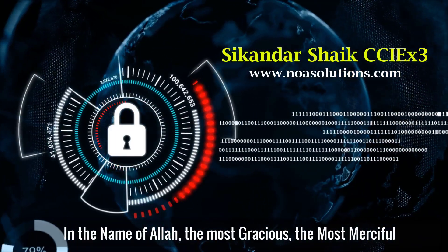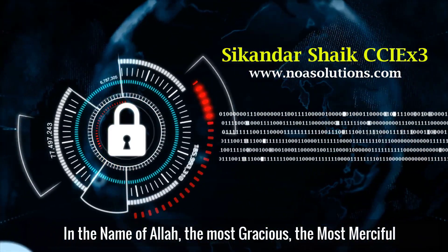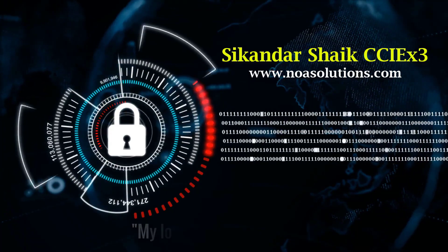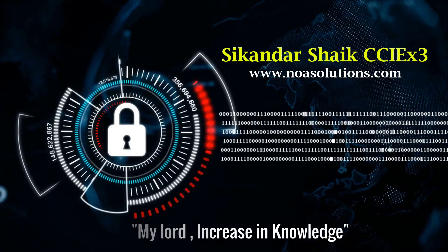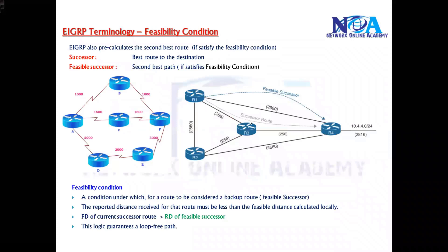Bismillah. Now again, if you remember, I already discussed that EIGRP also pre-calculates the second best route — or whatever routes it's going to install in the topology table.